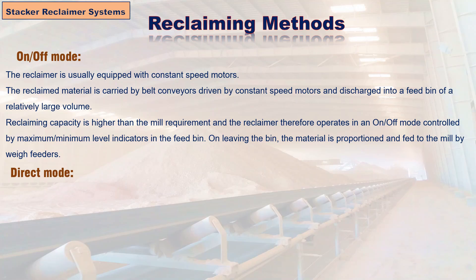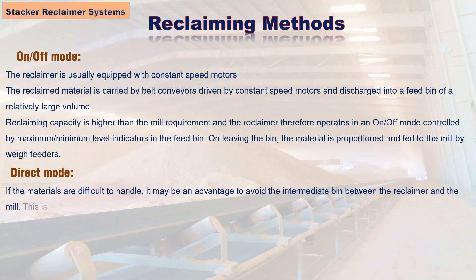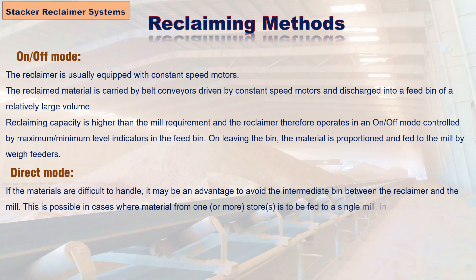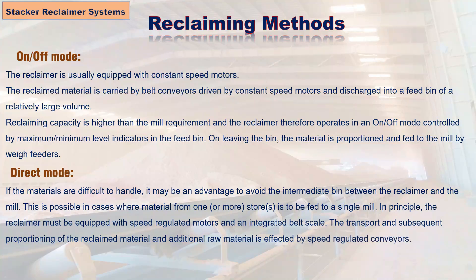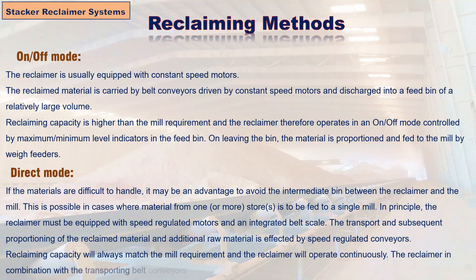In the direct mode, if materials are difficult to handle, it may be advantageous to avoid the intermediate bin between the reclaimer and the mill. This is possible in cases where material from one or more stores is to be fed to a single mill. The reclaimer must be equipped with speed-regulated motors and an integrated belt scale. Transport and proportioning of reclaimed material is effected by speed-regulated conveyors. Reclaiming capacity always matches the mill requirement, and the reclaimer operates continuously, acting as a weigh feeder.